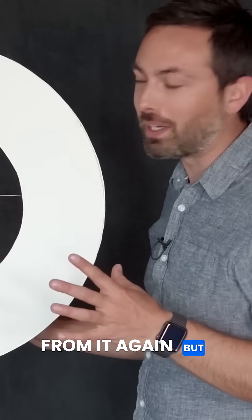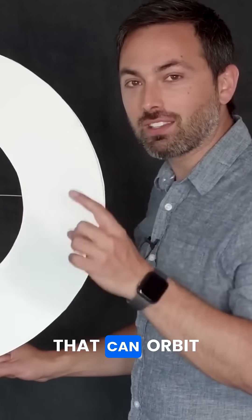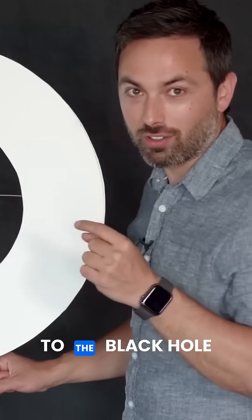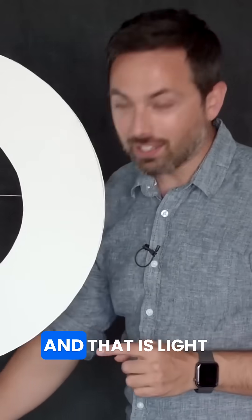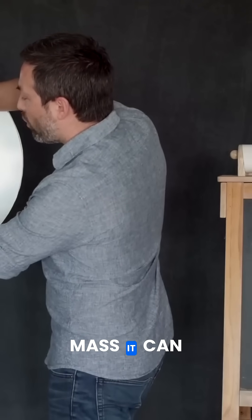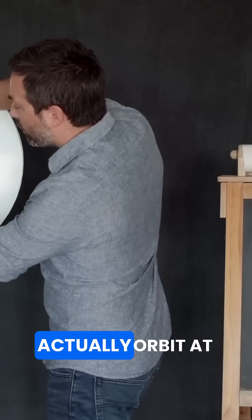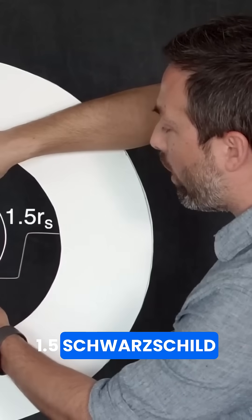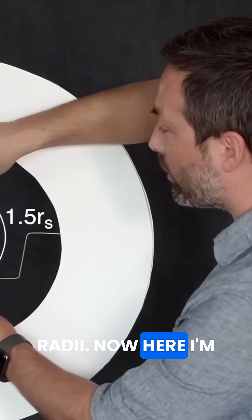And we never hear from it again. But there is something that can orbit closer to the black hole, and that is light. Because light has no mass, it can actually orbit at 1.5 Schwarzschild radii.